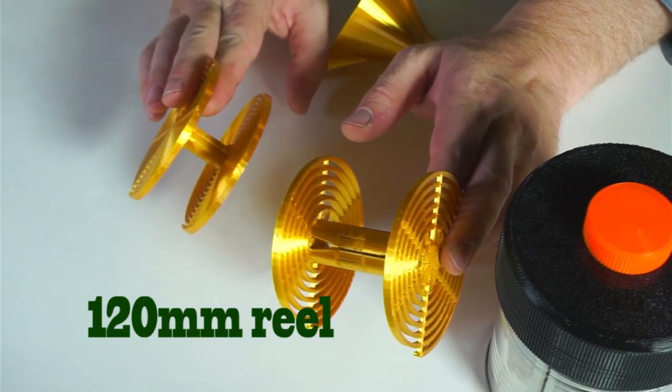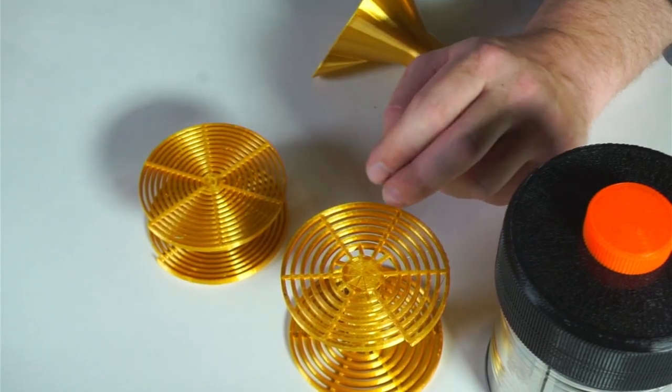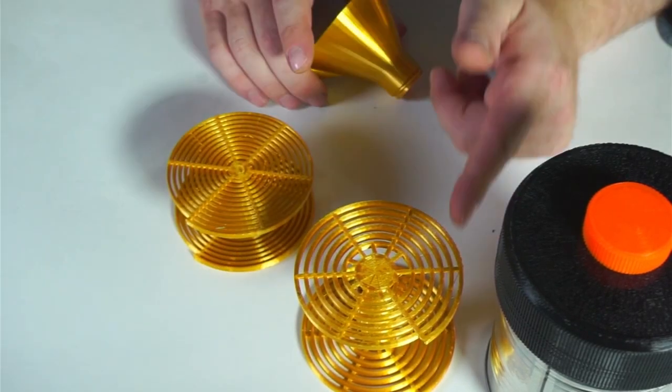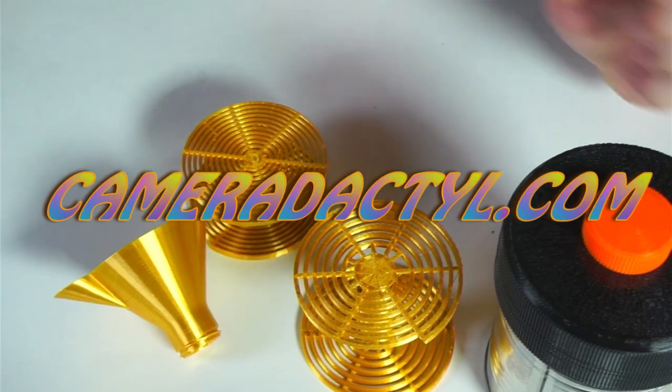We've got a 120mm and a 35mm reel. We'll take a look at how to assemble them. You will need some Weldon 3 acrylic solvent. All of these files are available now for download at Cameradactyl.com. Buy them!